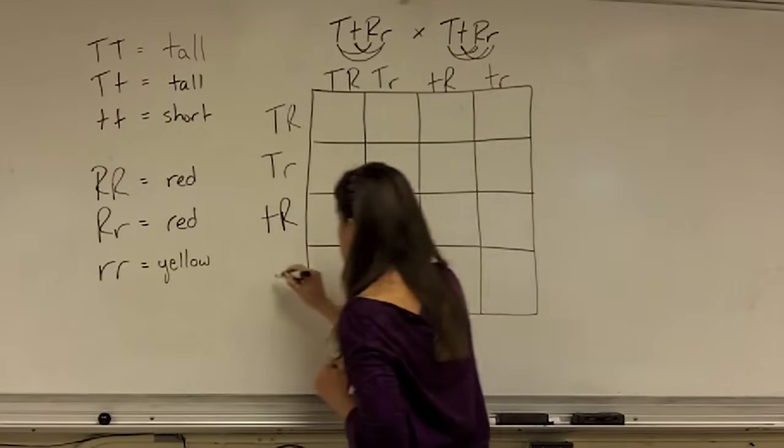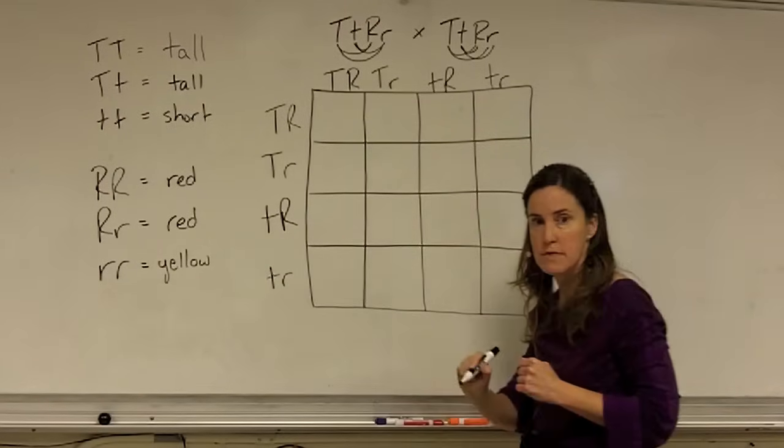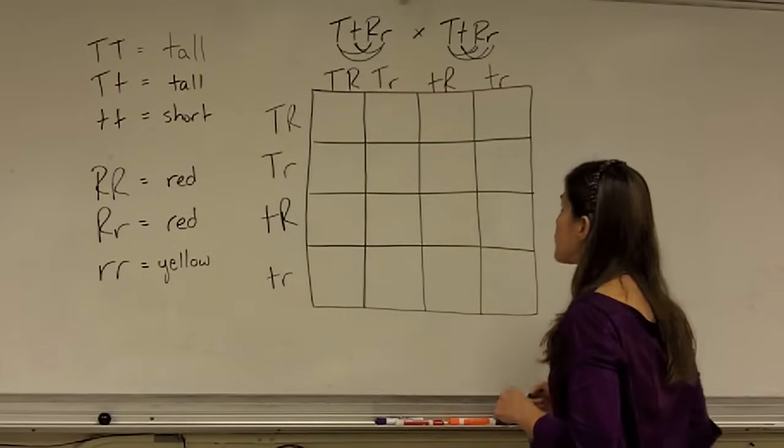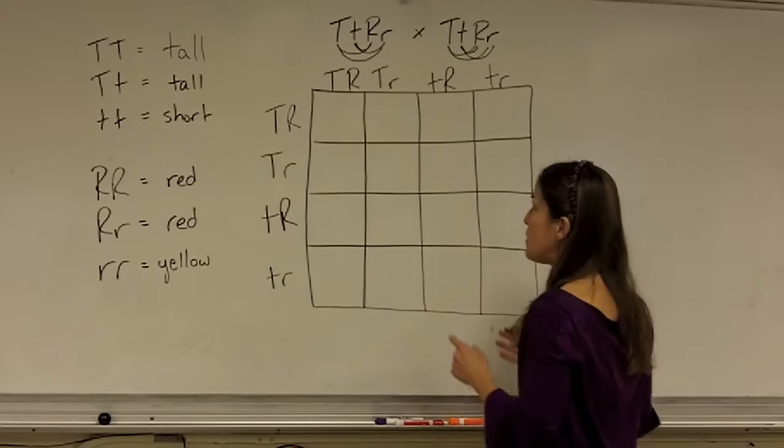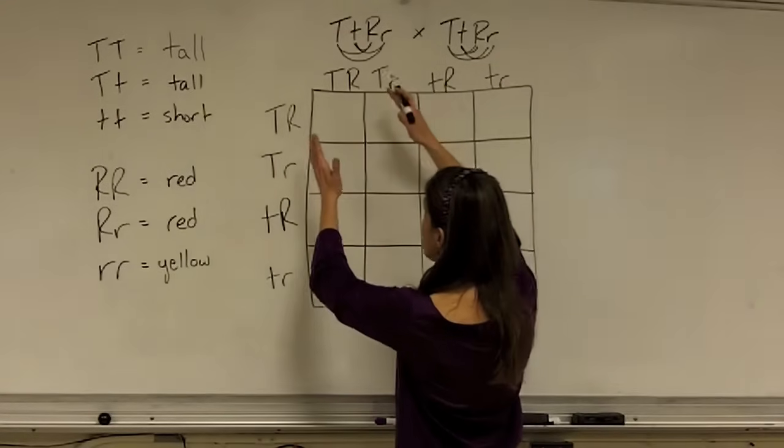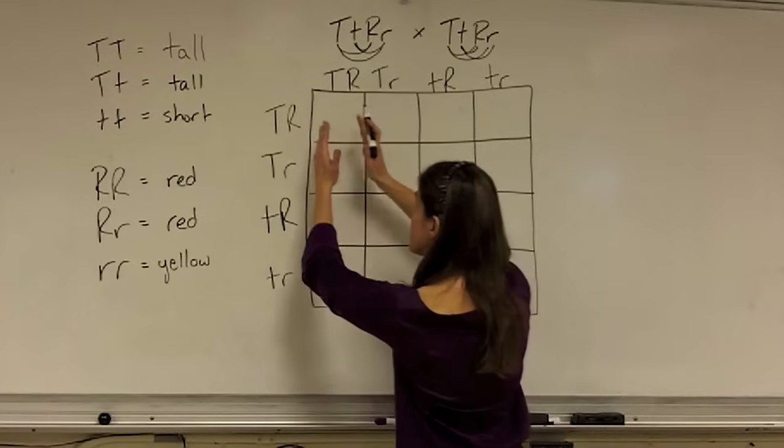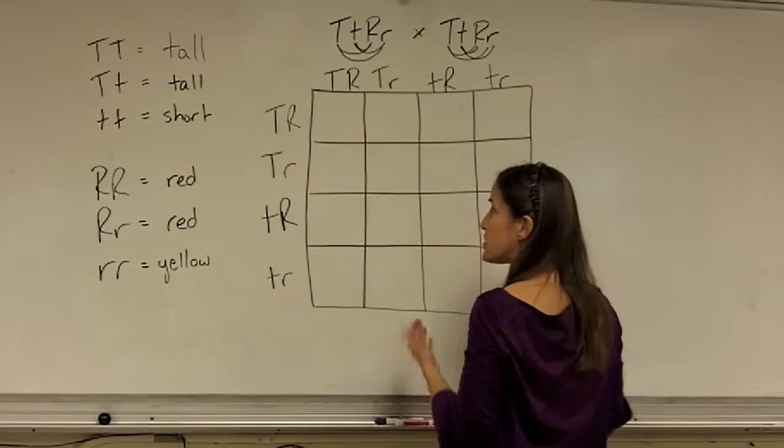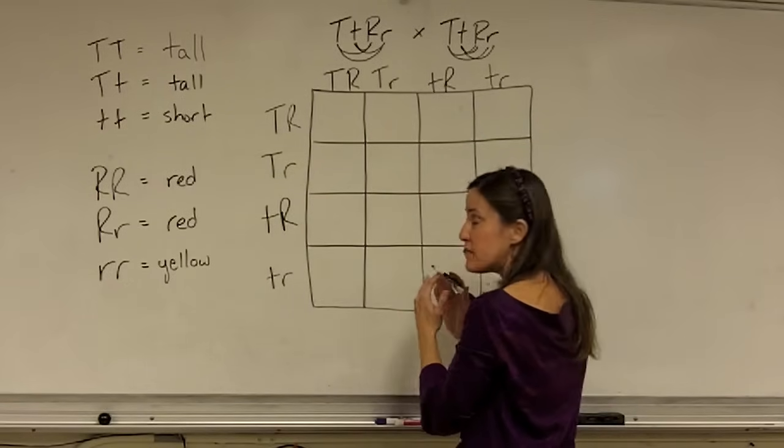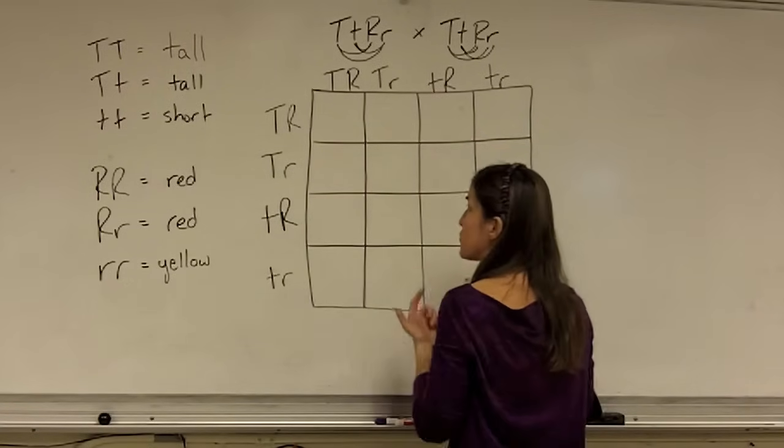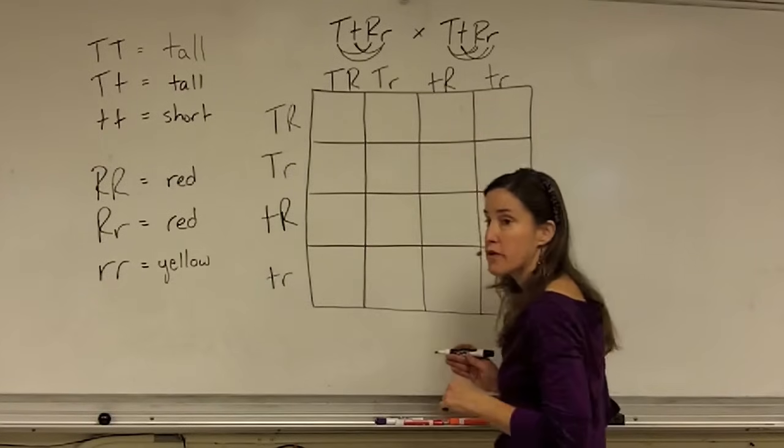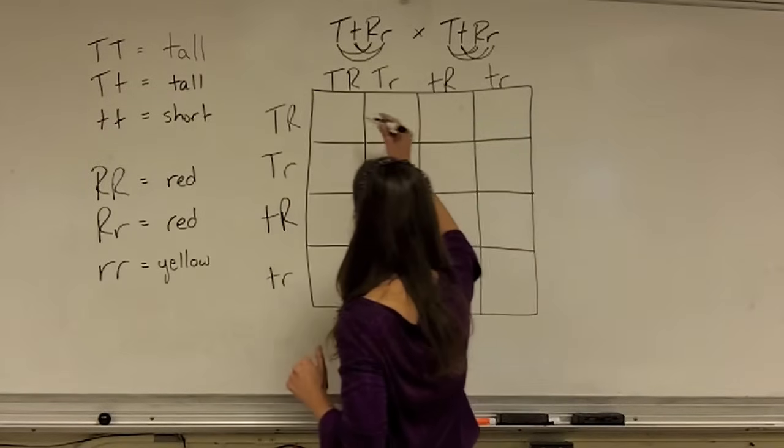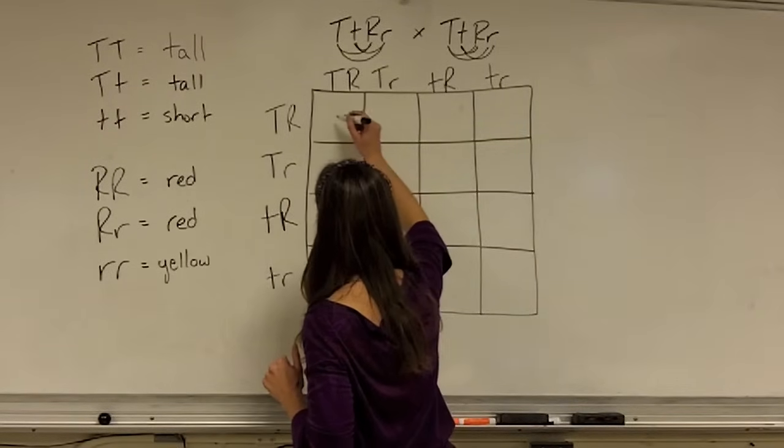When it comes time to fill in the offspring for the squares, you're going to follow those two rules. Remember, you're always going to make sure that you keep alleles of the same trait together, so you're going to keep your Ts together and your Rs together. You're also going to make sure that if there are two alleles of that type, and there's a dominant and a recessive, that you always put the dominant allele first. So to fill the square in, you're going to simply follow those two rules and combine the alleles to make the genotypes of the offspring.